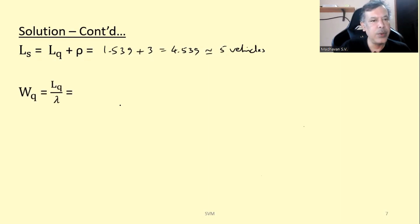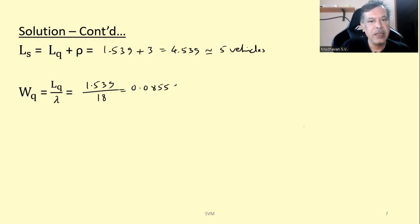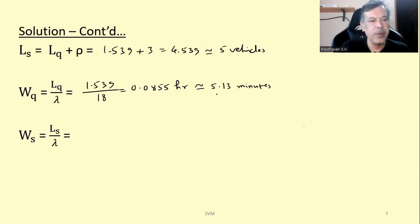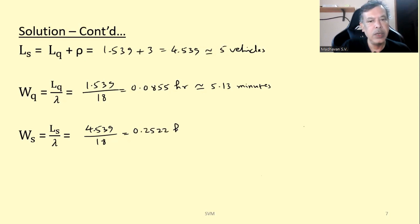Next is W_q, which is L_q divided by lambda. L_q was calculated as 1.539 divided by lambda equals 18, giving 0.0855 hours. Multiplying by 60 to convert to minutes, we get approximately 5.13 minutes. Then W_s, the waiting time in the system, is L_s divided by lambda. L_s before rounding was 4.539 divided by 18, giving 0.2522 hours. Multiplying by 60, we get 15.13 minutes.